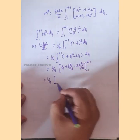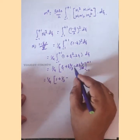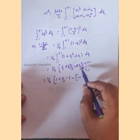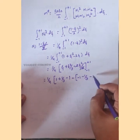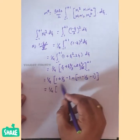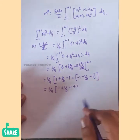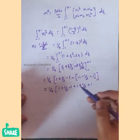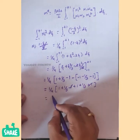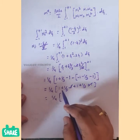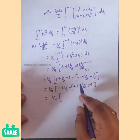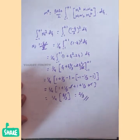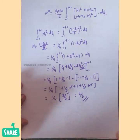Applying the limits for the N1² integration: upper limit gives 1 plus 1/3 minus 1, and lower limit gives minus 1 minus 1/3 plus 1. Simplifying with LCM of 3, we get (1/4) times (8/3), which equals 2/3. Therefore, the integral from minus 1 to plus 1 of N1² d-zeta equals 2/3.